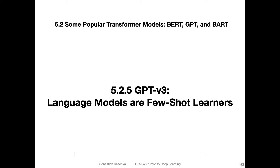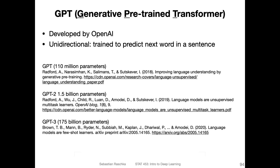Since all good things come in threes, and there's GPT version three. This is the last model in this GPT saga. GPT-3 is again much larger than the previous model — instead of 1.5 billion, it's now 175 billion parameters.